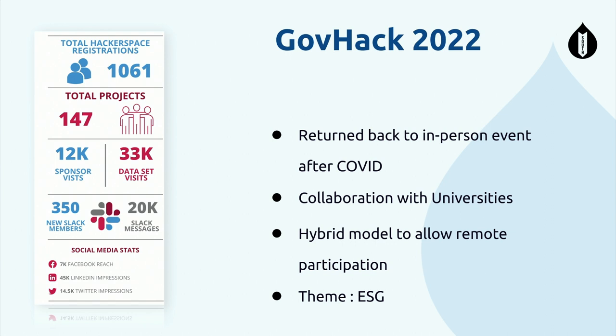Another thing we initiated this year is collaboration with universities. We're bringing many universities onto our platform because we know there is currently a skills gap in Australia, and many universities are taking the opportunity to use GovHack as a skill development opportunity. One thing COVID gave us is an online platform, so we're now mature enough to run events online as well. This year we tried hybrid — people from other countries can join and create a team, and in-person participants can collaborate with them using Slack, Zoom, and many other platforms.